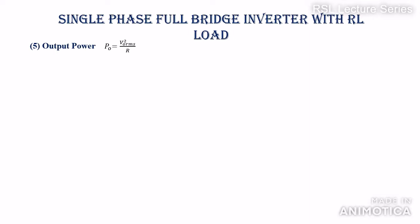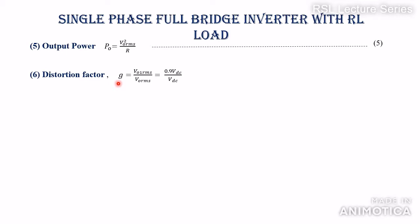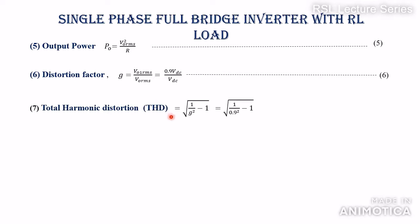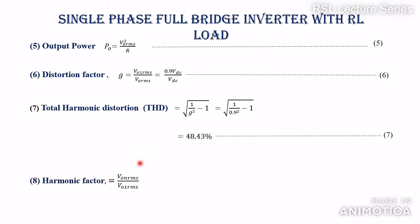The output power P0 = V0_RMS² / R. The distortion factor G is the ratio of the RMS fundamental component to the total RMS output voltage: G = V01_RMS / V0_RMS = 0.9·VDC / VDC = 0.9. Total harmonic distortion (THD) = √(1/G² − 1) = √(1/0.81 − 1) = 48.43%. So the THD for the single phase full bridge inverter with RL load is 48.43%. The harmonic factor is given by V0n_RMS divided by V01_RMS, where V01_RMS is the RMS value of the fundamental component.